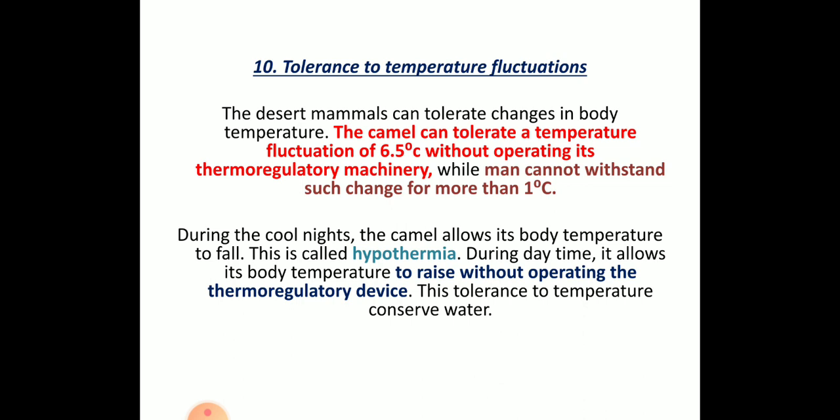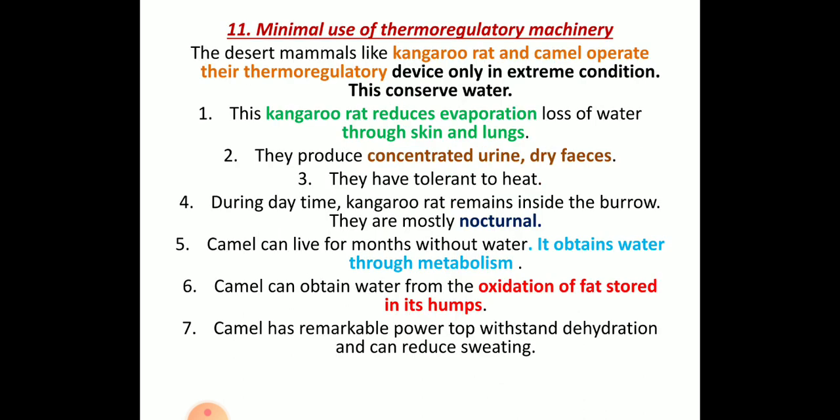This condition is called hypothermia. During daytime temperatures are very high, but during the night the camel allows its body temperature to fall — that is called hypothermia. During daytime it raises its body temperature without operating thermoregulatory devices. Thermoregulation takes place by different types of receptors, and this tolerance of temperature also helps in conserving water.